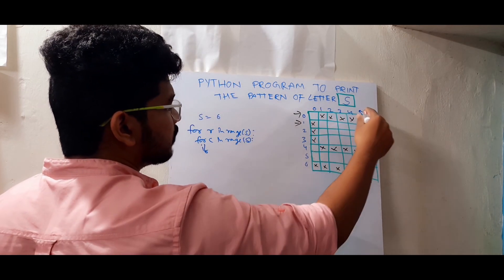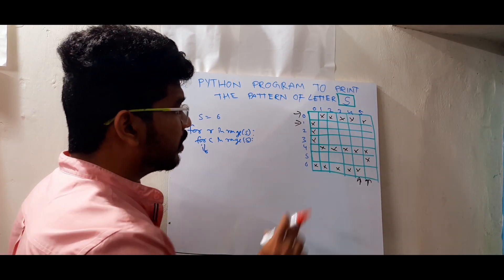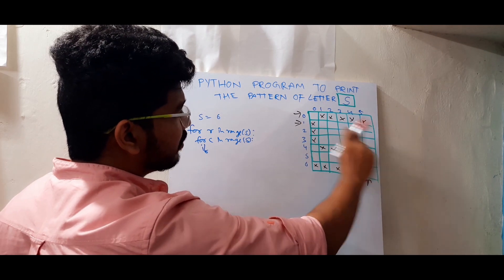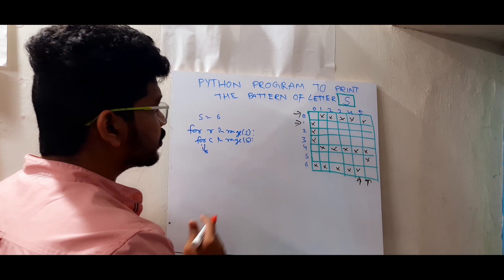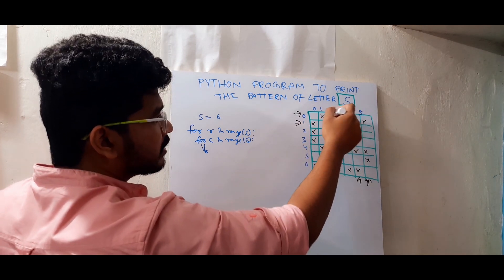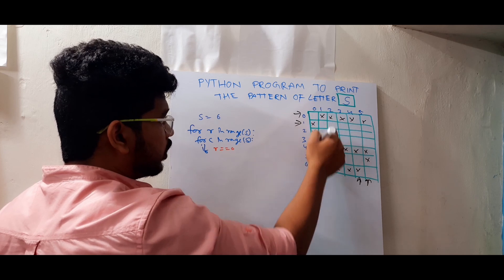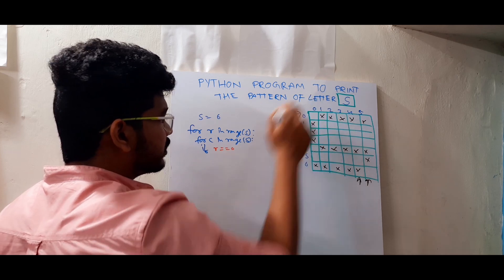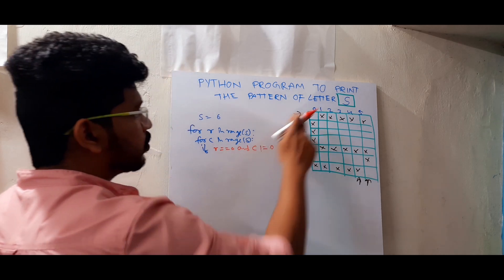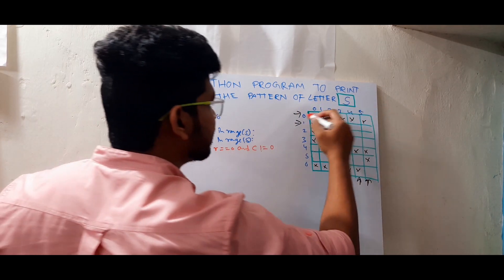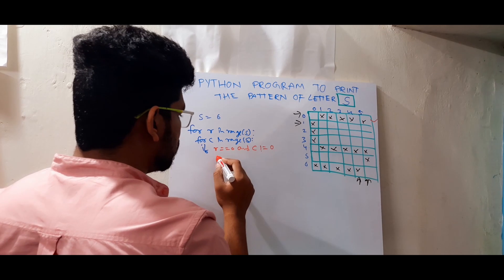We can print the first column, last column, first row, middle row, and last row — everything in all the corners. In the first column we print the first half, and in the last column we print the last half. There will be six conditions. The first condition: if row equals zero (first row), and the column should not be equal to zero and not equal to one.